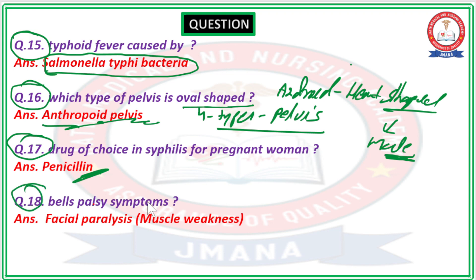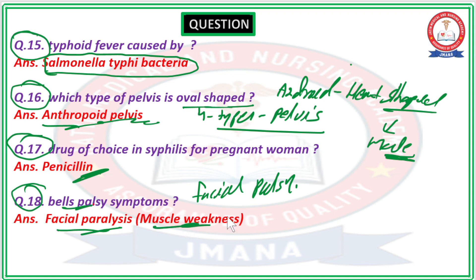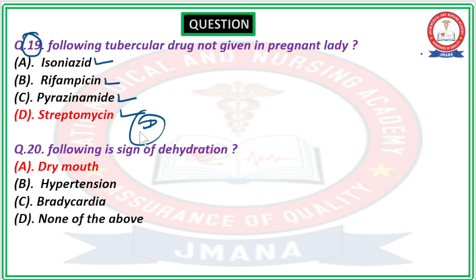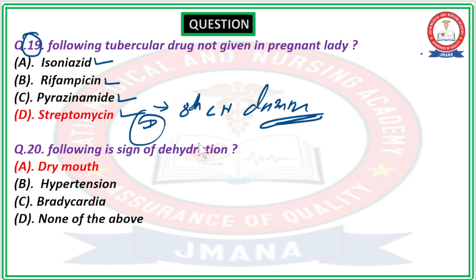Question number 18: Bell's Palsy symptoms. Bell's Palsy, also known as Facial Palsy, has facial paralysis as its main symptom. This occurs because the facial muscles become weak, leading to facial paralysis. It damages the 8th cranial nerve, which can cause deafness in children, making certain treatments contraindicated in pregnant women.